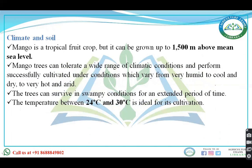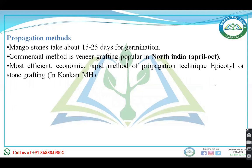When you talk about climate and soil, mango can tolerate a wide variety of climatic conditions. The suitable temperature for mango cultivation is 24 to 30 degrees Celsius, and the suitable pH is 6.5 to 7.5.